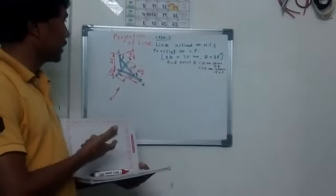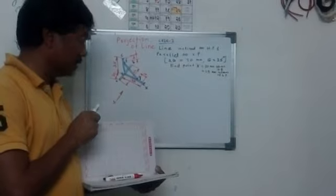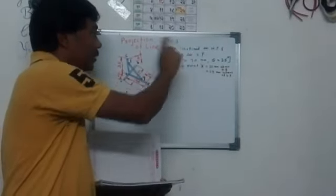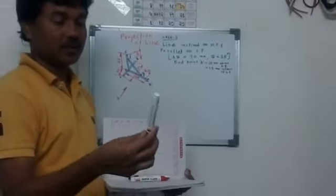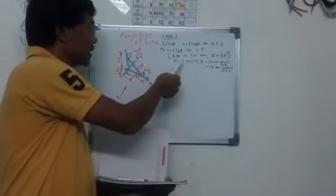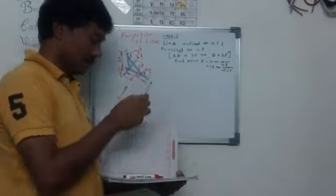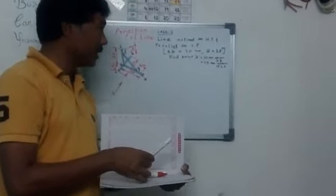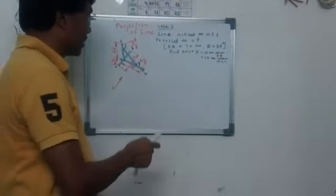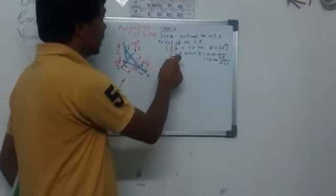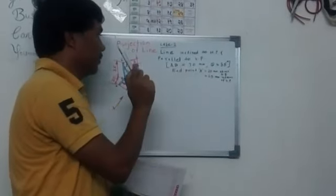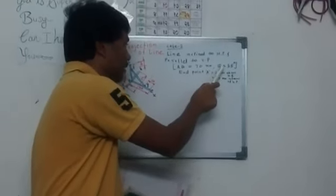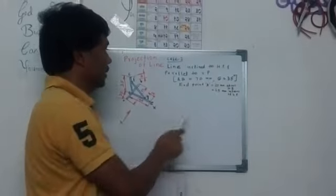Earlier we covered the case of a line parallel to both planes. The next case is a line inclined to HP (inclined to one plane) and parallel to another plane. For example, assume line AB with a length of 70 millimeters. The line is inclined to the horizontal plane and parallel to VP. The inclination with HP is 35 degrees.